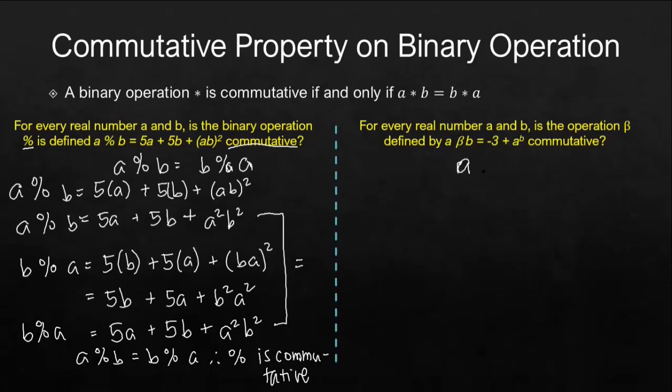So we have to prove that a beta b equals b beta a. Let's start with the first one. We have a beta b. We have negative 3 plus the first term should be the base and the second term should be the exponent. So by looking at this, it seems like we cannot do anything about it. We cannot simplify or combine these two, so we will leave it like that.